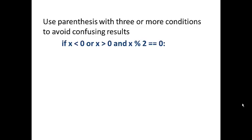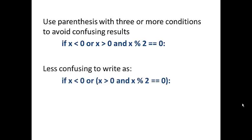You can use parentheses if you want to use three or more conditions to avoid confusing results. It's not really clear in this statement exactly what we're trying to do. If x < 0 or x > 0 and x % 2 == 0. When you put parentheses around it, it becomes a lot clearer. The first statement is equivalent to this statement.